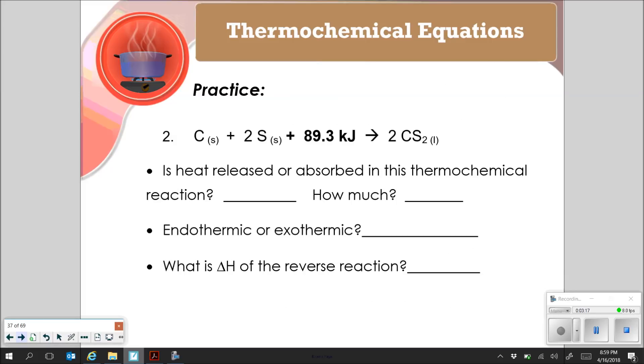Looking at another thermochemical equation, in this case, we've got our kilojoules right here, 89.3 kilojoules, as a reactant in my problem. So if heat is being released or absorbed in this thermochemical equation, we can say now that it is being absorbed, because the 89.3 kilojoules is a reactant. How much? 89.3 kilojoules. So this is going to be an endothermic thermochemical equation.